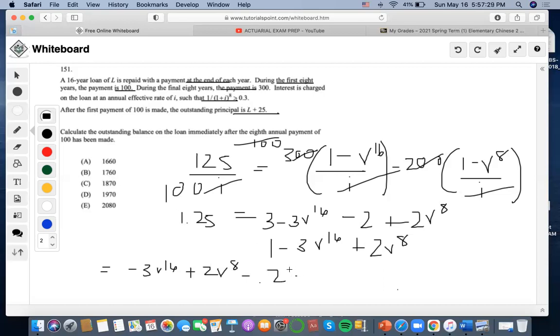So three minus three V to the 16, minus two plus two V to the 8. This looks like a quadratic equation and we know that's a really traditional setting a variable equal to x, the formula solves these types of problems.